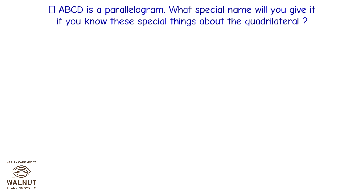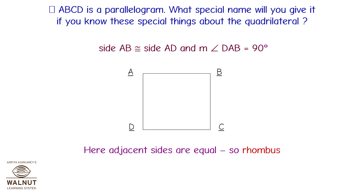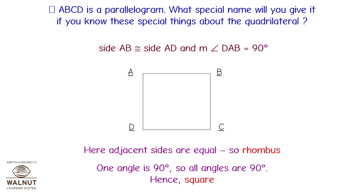Quadrilateral ABCD is a parallelogram. What special name will you give it if side AB is congruent to side AD, and measure of angle DAB is equal to 90 degrees? Here, adjacent sides are equal — so it is a rhombus — and one angle is 90 degrees, so all angles are 90 degrees. Hence, it is a square.